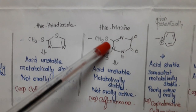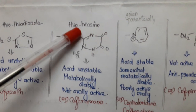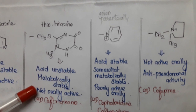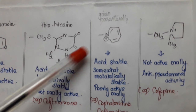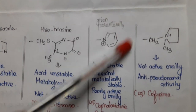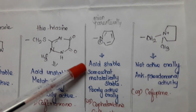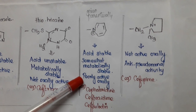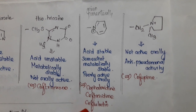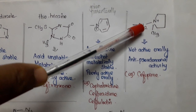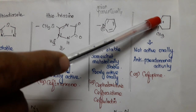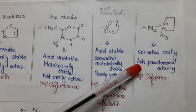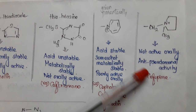If we introduce thiotriazine in the third portion, the compound would be acid unstable, metabolically stable, and not active orally. If we introduce a pyridinium ion group in the third portion, the final compound is acid stable, somewhat metabolically stable, and poorly active orally. If a methylpyridinium group is added in the third portion, the final compound is not active orally but has anti-pseudomonal activity. Example is cefepime.